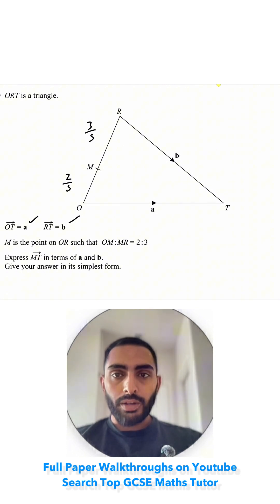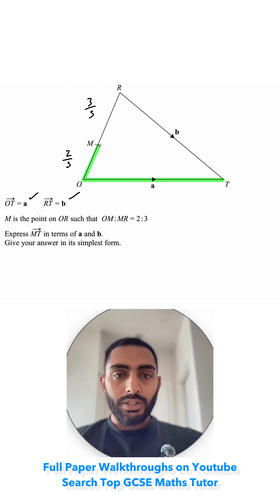Express MT in terms of A and B. Give your answer in simplest form. So I'm trying to find this vector MT. The first thing I can see, I don't have the vector from M to O, so I need to find that vector.